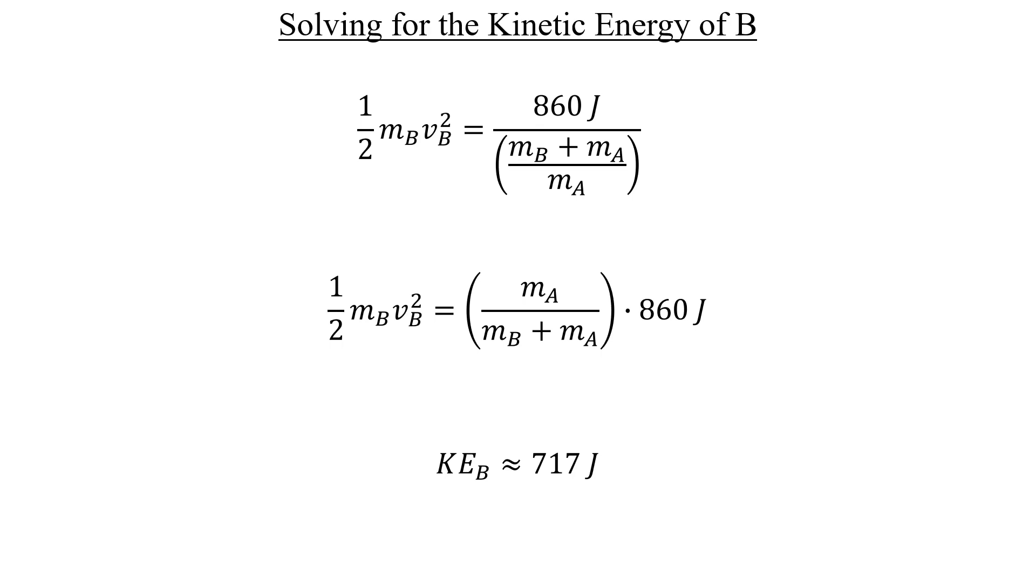We're going to need the kinetic energy of A as well. And thankfully, we don't have to do this algebraic process all over again. Let's just subtract 717 from the 860 joules total. And now we have A's kinetic energy. That makes it really easy.